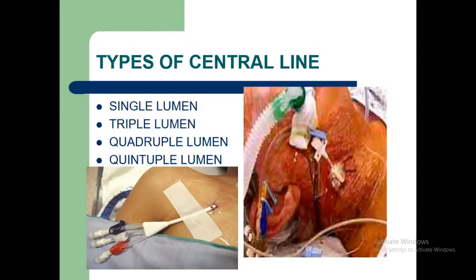Types of central lines include single lumen, triple lumen, quadruple lumen, and quintuple lumen. Here you can see how a central line looks from the outside.